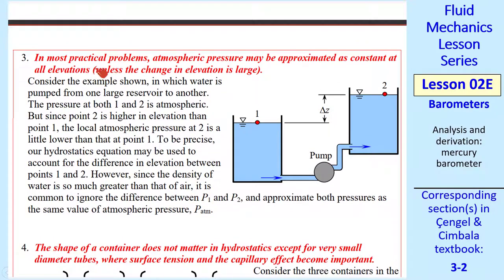Rule number three: in most practical problems, atmospheric pressure may be approximated as constant at all elevations, unless the change in elevation Δz is huge. For example, if we're pumping water from one reservoir to another, we'll assume that p_atm1 = p_atm2, even though they're at different elevations. If you want to be more exact, you'd have to calculate the difference in atmospheric pressure due to the air column difference between points 1 and 2. But since a liquid like water is so much more dense than air, a good approximation is just to assume that both of these are at the same pressure. So we approximate p₁ = p₂ = p_atm. By the way, we will do many problems like this in this course.